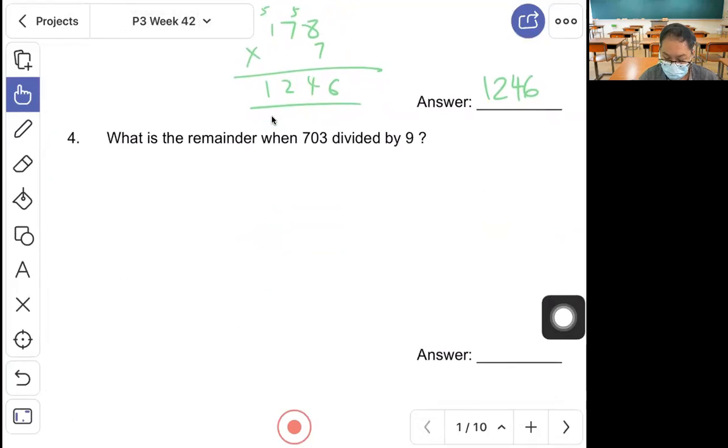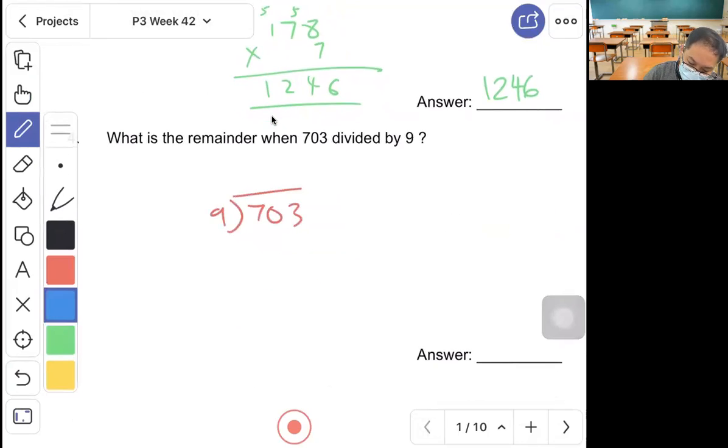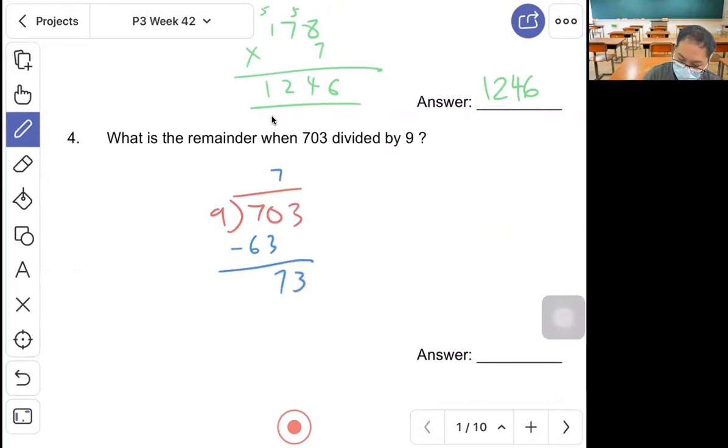Question 4, what is the remainder? 763 divided by 9. 763 minus 72 is 8, 72 minus 72 is 0, so remainder is 1.